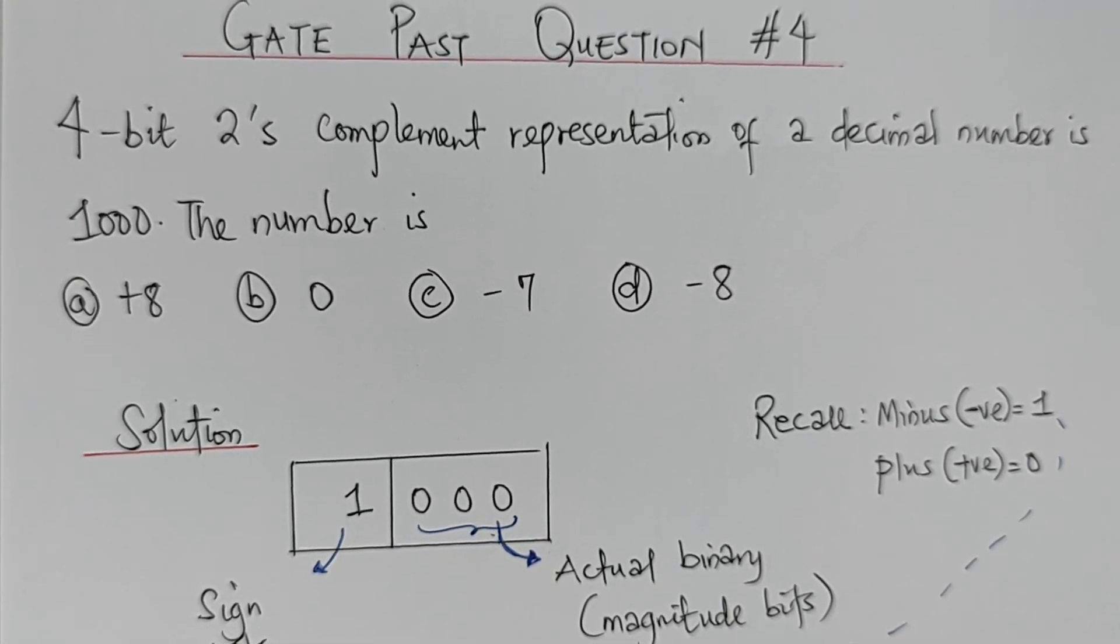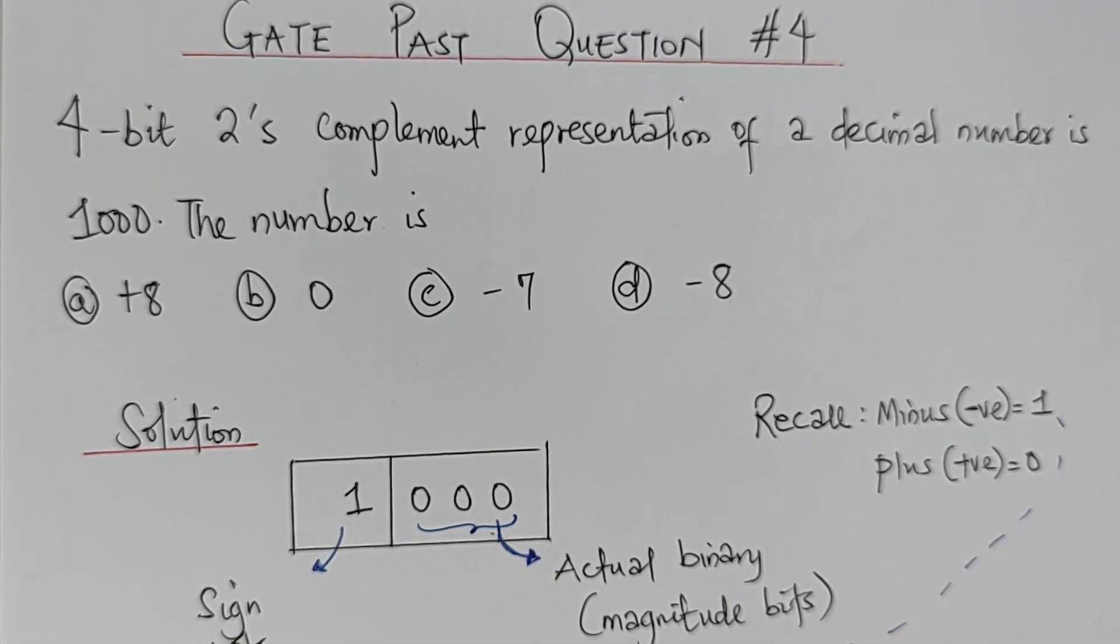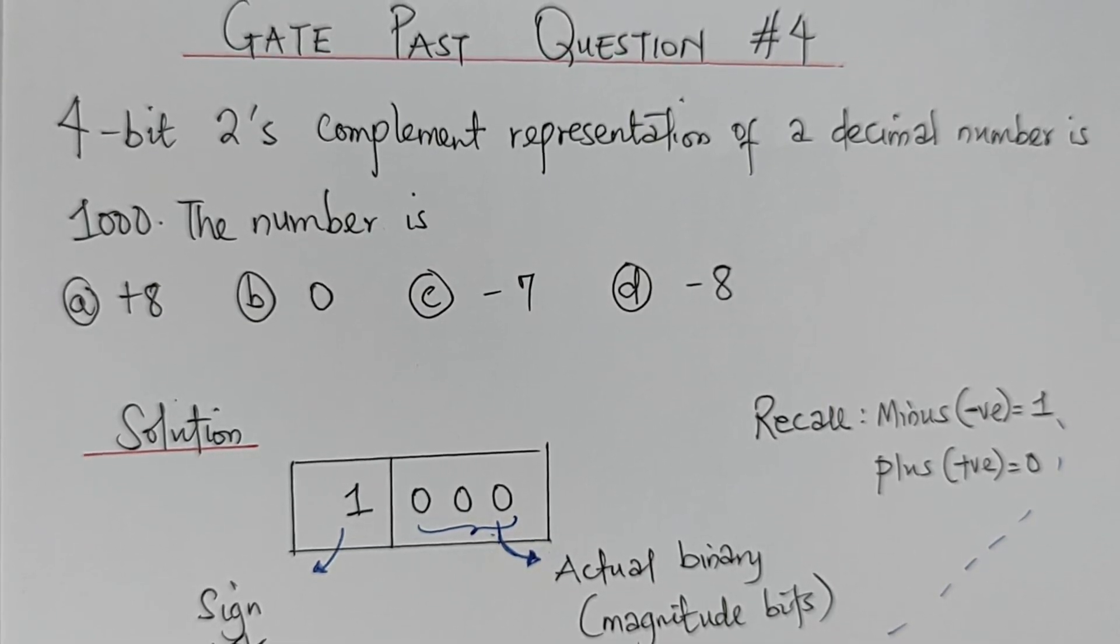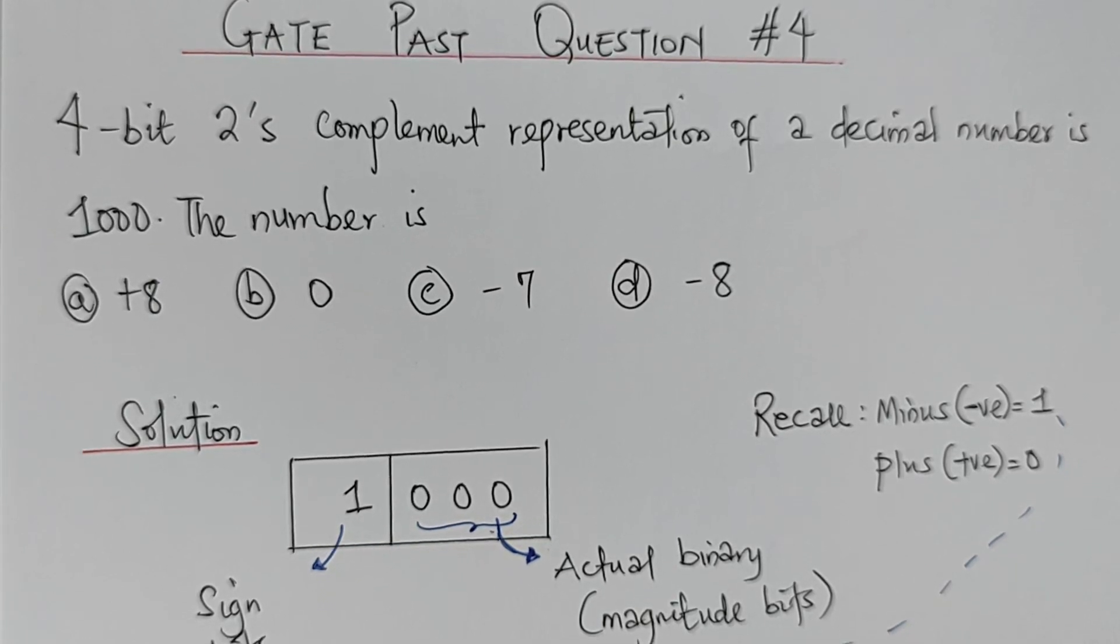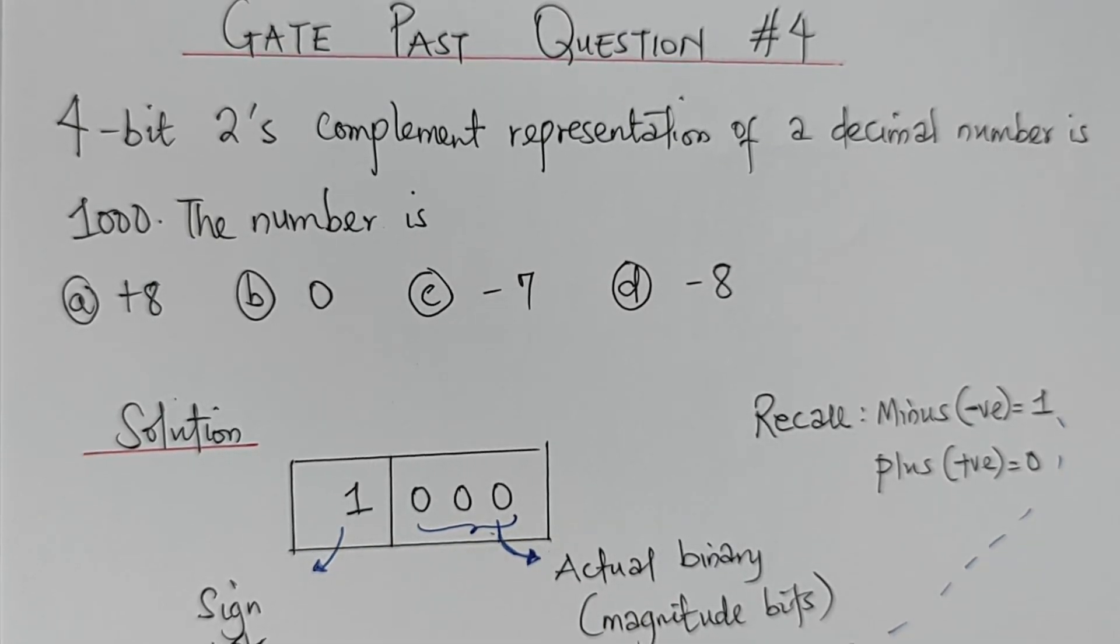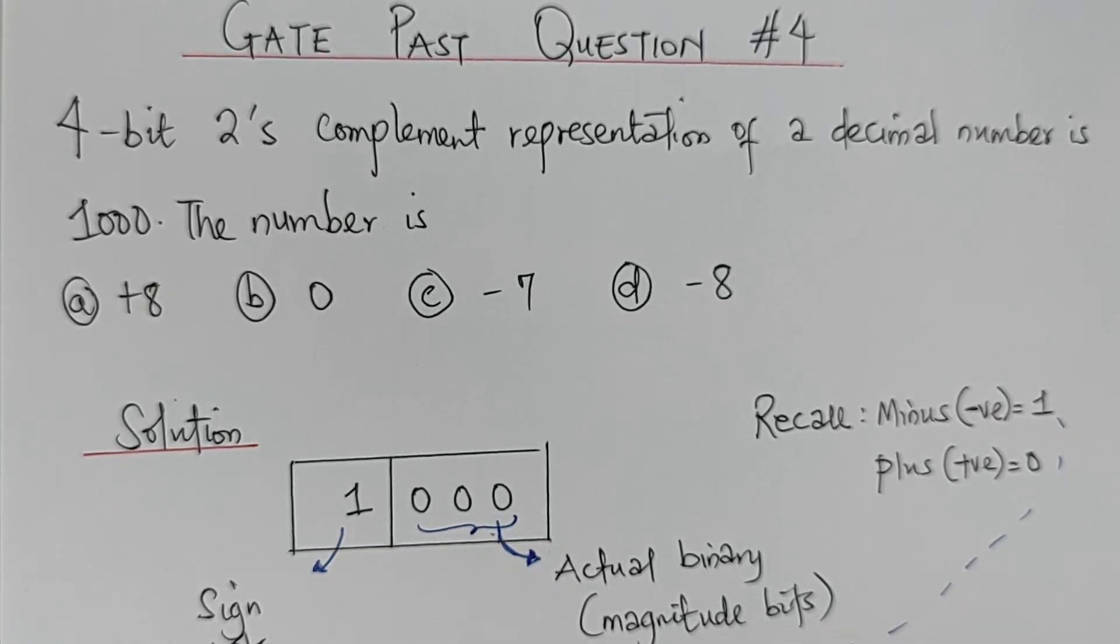In this one, we have a question that 4-bit 2's complement representation of a decimal number is 1000. The number is what? We have option A plus 8, B 0, C minus 7, D minus 8.